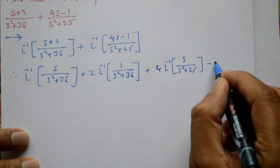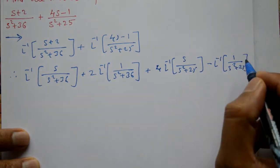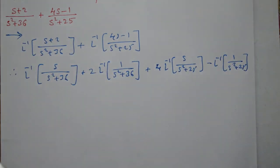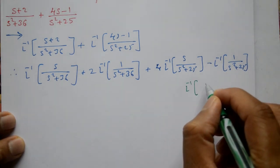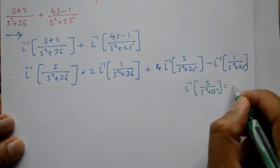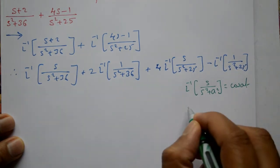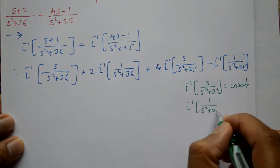...minus 1 is remaining: minus inverse of 1 by s squared plus 25. Here we are using standard functions. The standard functions are: inverse of s by s squared plus a squared equals cos at, and inverse of 1 by s squared plus a squared equals sin at divided by a.